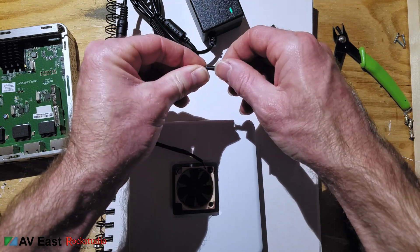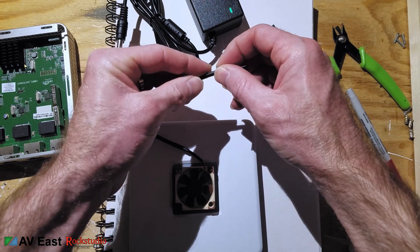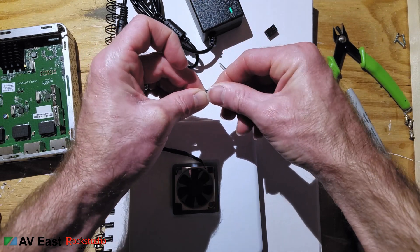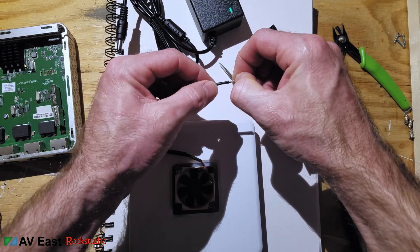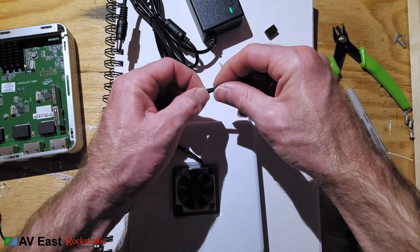Now you can shorten that braided sleeve a little bit and then slide the shrink tube back over the wires. Finesse it a little bit to get it in place.